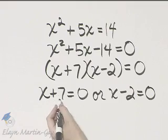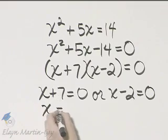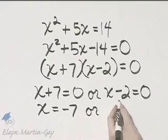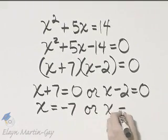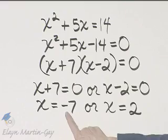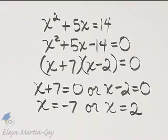To solve this equation, I'll subtract 7 from both sides, and I'll have x is equal to negative 7. Here I'll add 2 to both sides, and I have x is equal to 2. So we have 2 solutions. Negative 7 is a solution, and 2 is a solution.